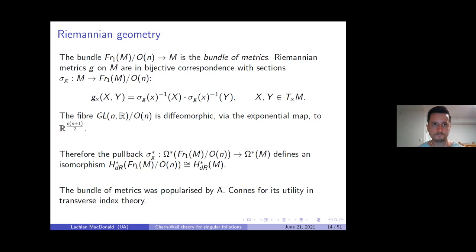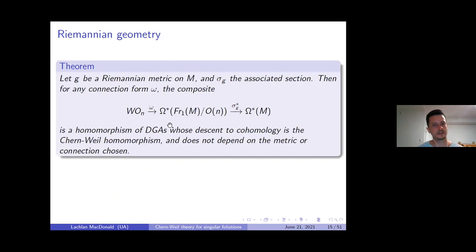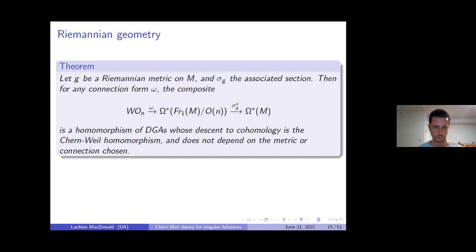Putting everything together: if we take a connection form on the frame bundle and a Riemannian metric on our manifold, the principal connection gives a map into the differential forms on one-frames mod O(n) — the bundle of metrics — which can then be pulled back via a choice of Riemannian metric to differential forms on M. This gives the usual Chern-Weil homomorphism; in particular, the morphism on cohomology doesn't depend on the connection or the metric chosen.